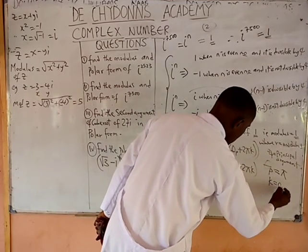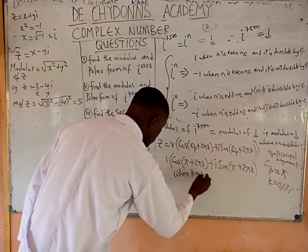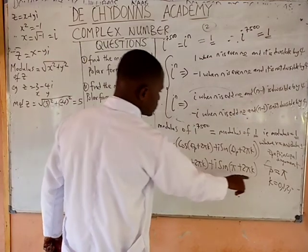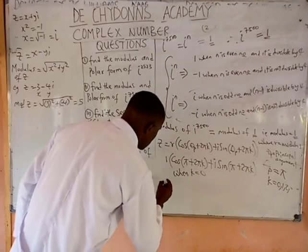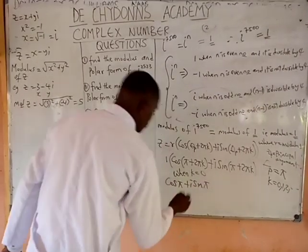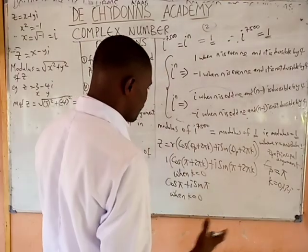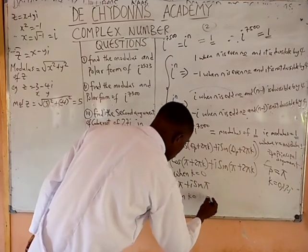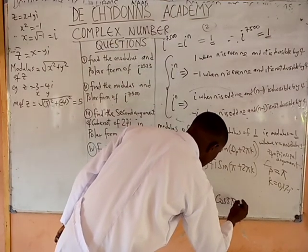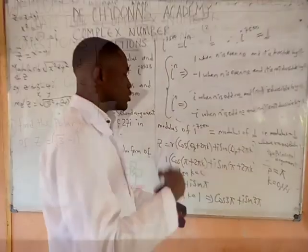So we put it in polar form: z equals 1 bracket cos(pi + 2πk) plus i sine(pi + 2πk), where k ranges from 0, 1, 2 and so on. When k equals 0, we get cos(pi) plus i sine(pi). When k equals 1, we get cos(pi + 2pi), which is cos(3pi) plus i sine(3pi). That is how you get further argument values.